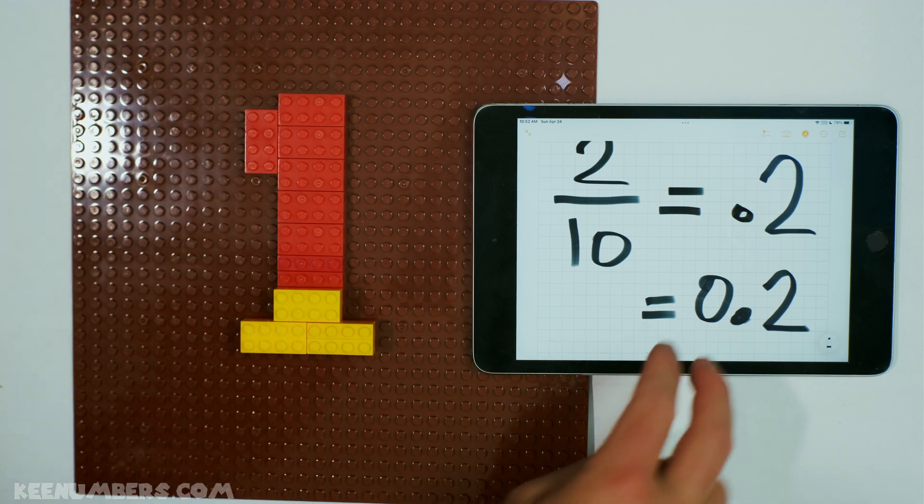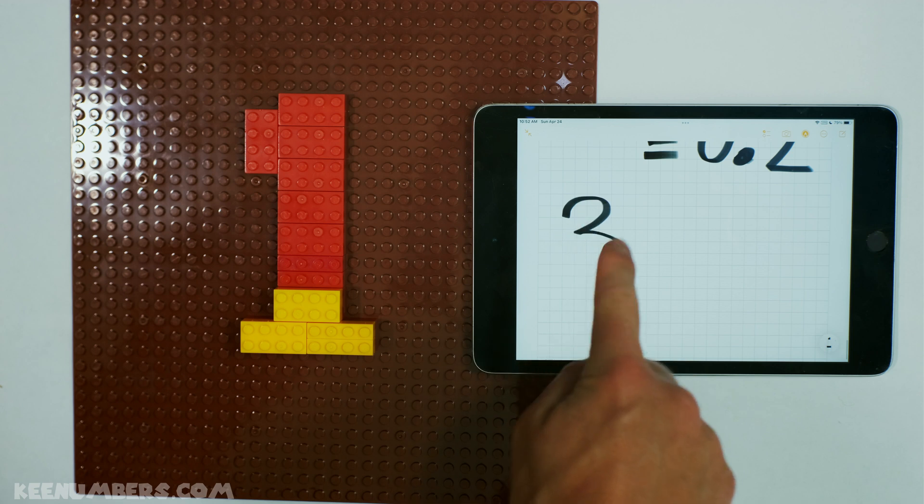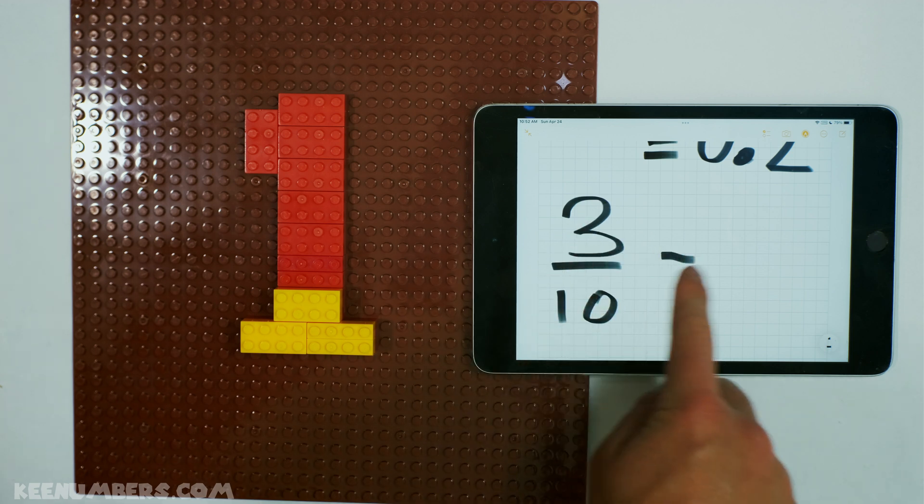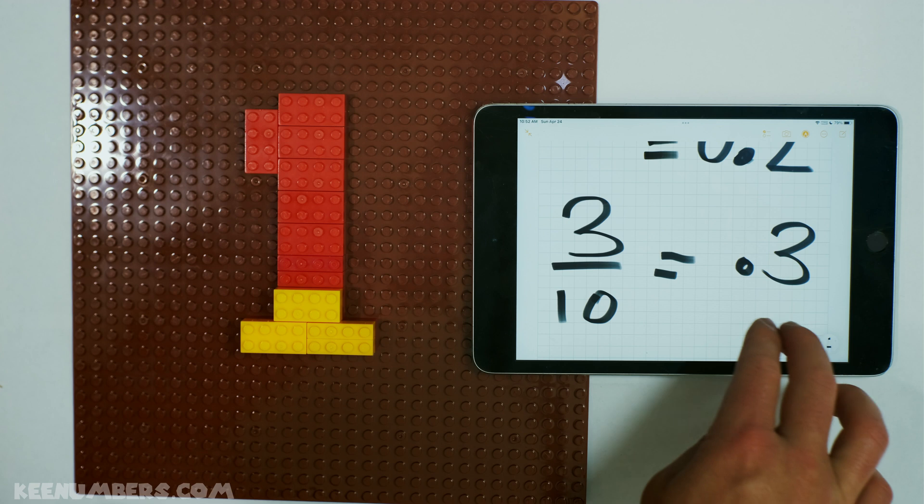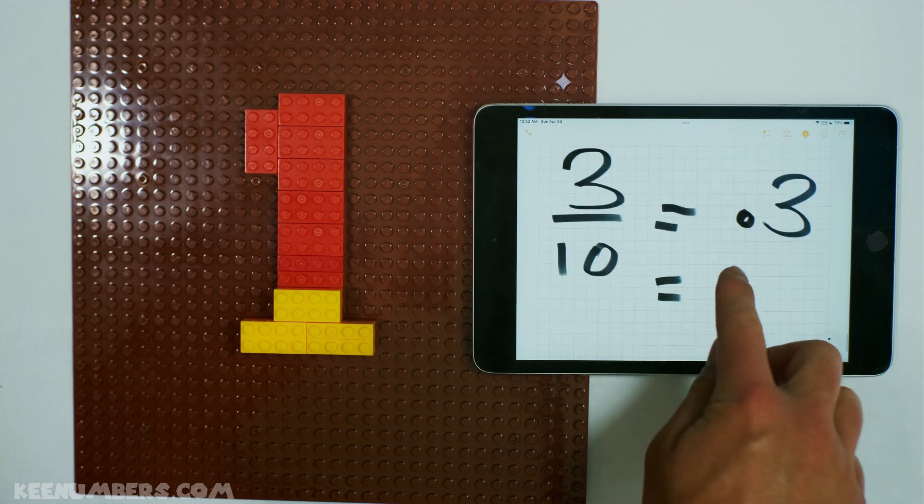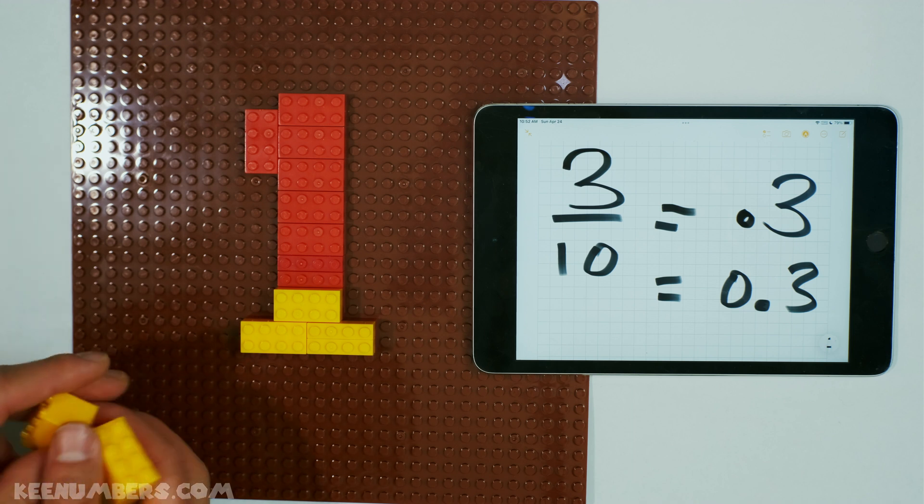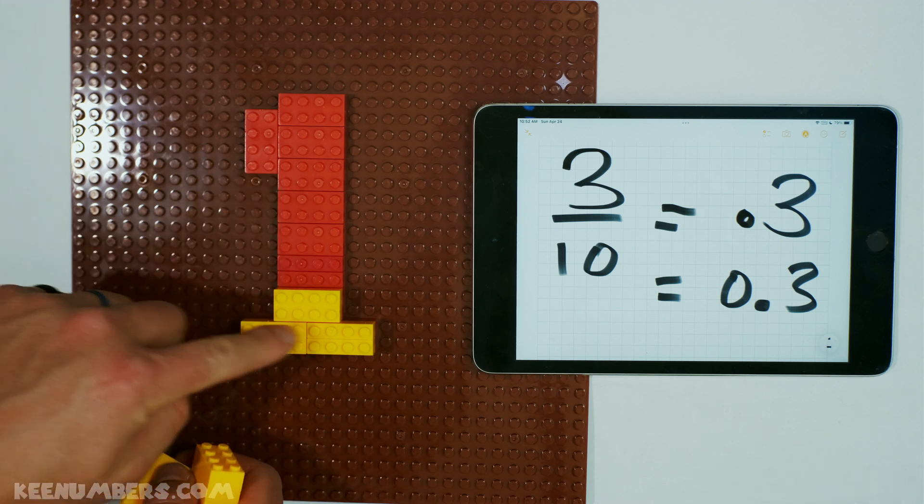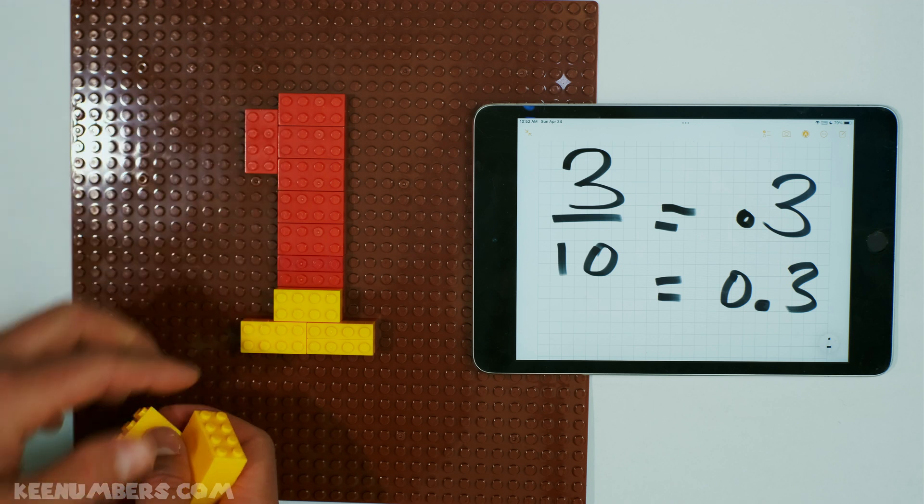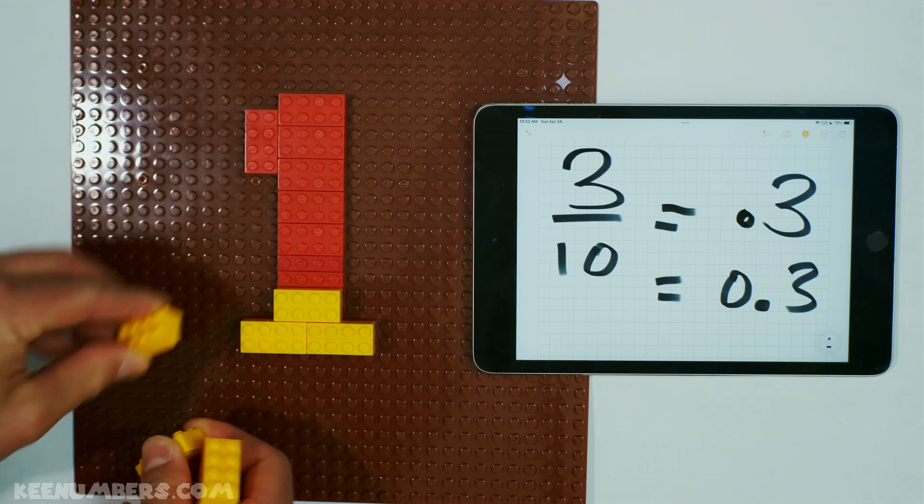What if you have 3 tenths? That's going to look like this. 3 tenths, that's 0.3. Or, for those future medical professionals, that is 0.3. Now, 3 tenths means we have 3 equal parts. We're marching our way to making 1 whole.